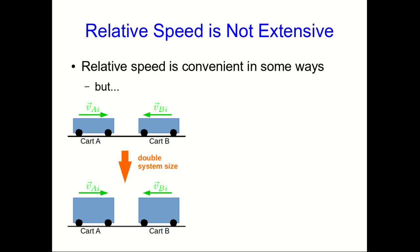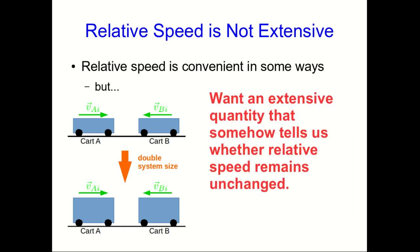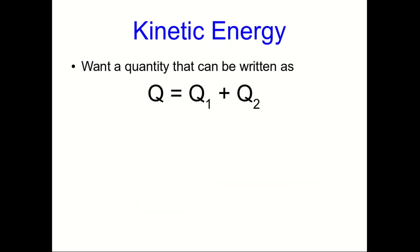We like extensive quantities. They're convenient, they've got nice properties, that nice accounting system. And besides, every time I talk about extensive quantities you get to look at cute cat pictures, and who doesn't want to do that. So we'd like an extensive quantity that somehow tells us whether relative speed remains unchanged. To get an extensive quantity, we want something where if the whole system has quantity Q and consists of two parts, those parts are Q1 and Q2 and you just add them to get the total. That's how extensive quantities work.